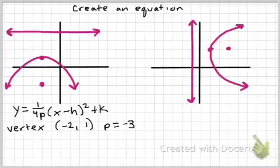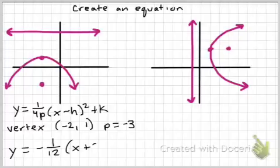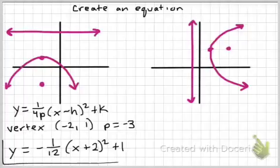Now all we have to do is plug in some points. Y equals negative 1 over 12, x plus 2 squared plus 1. And there you have it.